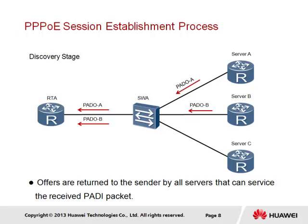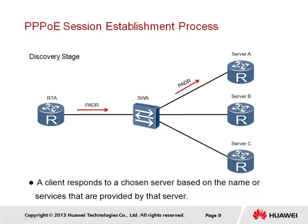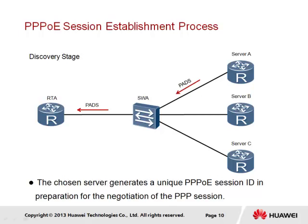In this instance, multiple offers are received by RTA. RTA receives the PADO packets and selects one server based on either the server name or the services offered, sending a PPPoE Active Discovery Request, or PADR packet, as a unicast to the selected server, which in this case is Server A. After the PADR packet is received, the server begins preparing a unique session between itself and RTA. The unique session ID is then created and sent to RTA as part of the PPPoE Discovery Session Confirmation, or PADS packet.